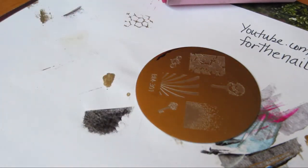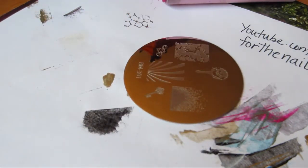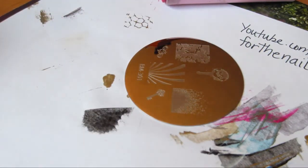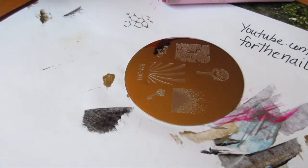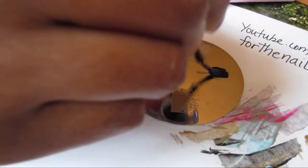And so next I'm going to stamp with plate 301. And I think I'm going to use the little bat here. I've been curious to know what he would look like if he was stamped. And I'm going to use my black cream from Wet n Wild.